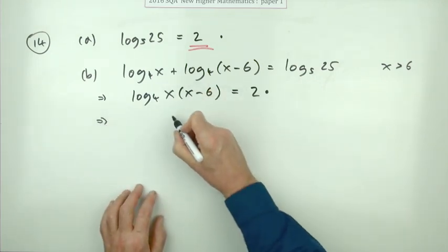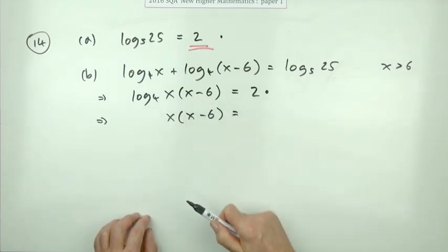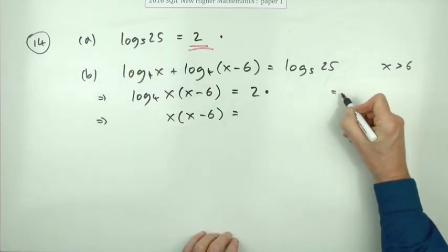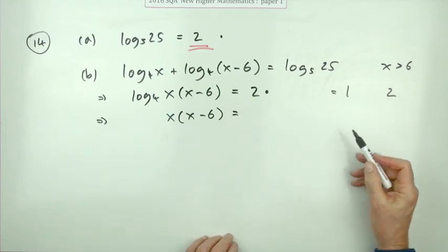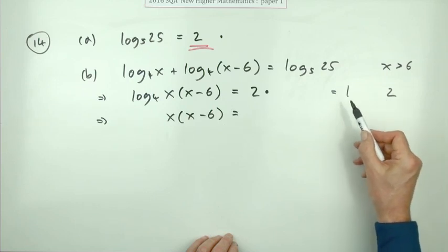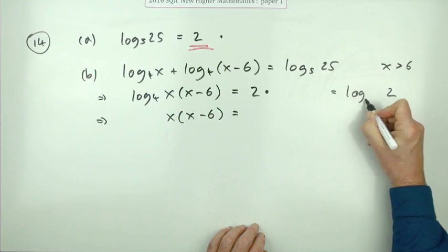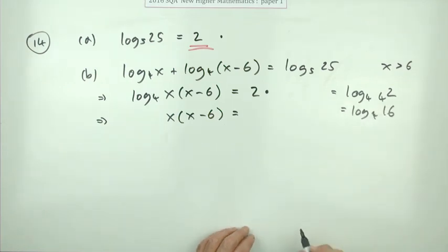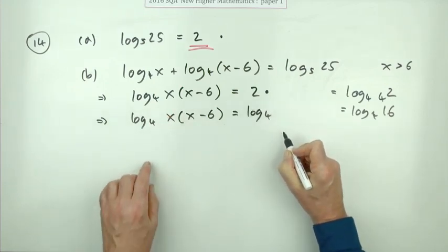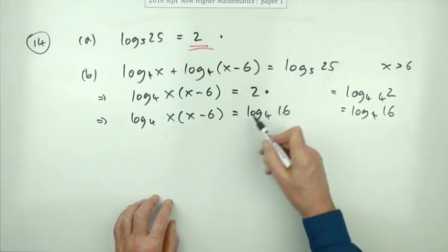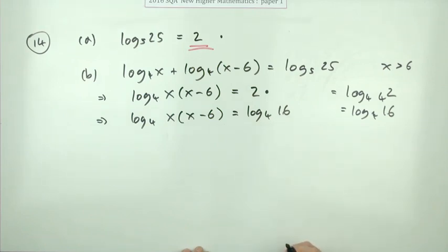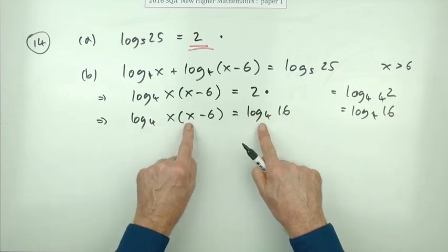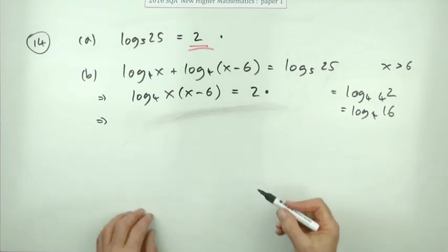You don't need to change 2 into a logarithm base 4. You could write 2 as log base 4 of 16, since log₄ of 4² equals log₄ of 16. Then you'd say the logarithms have the same answer, so the inputs must be the same. But you don't need to do that—just use the laws.